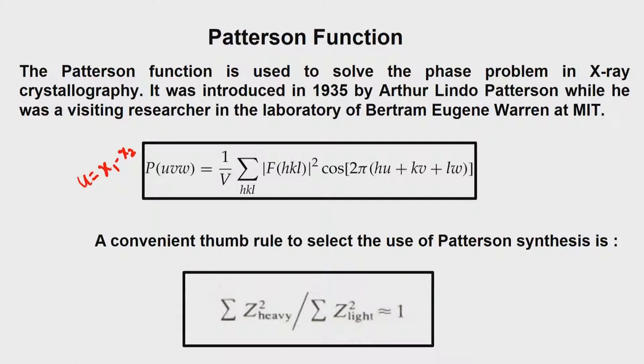We have direct space, reciprocal space, and now also vector space — Patterson represents the vector space. What you see is the total absence of phase. So we do not have phase information here; everything is real. The quantities are only real because we are using the cosine function with no imaginary sine component. As a consequence, this can be directly evaluated in real space — a real-space vector space.